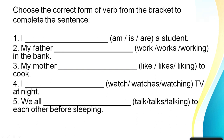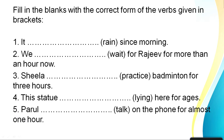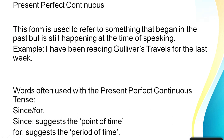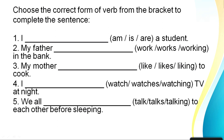Continuing the mixed practice: 'My mother dash to cook' — 'likes to cook.' 'I dash TV at night' — 'I watch TV at night' because it's a routine. 'We all dash to each other before speaking' — 'We all talk to each other before speaking.' Finally, a quick review of present perfect continuous: it refers to something that began in the past but is still continuing at the time of speaking — for example, 'I have been reading Gulliver's Travels for the last week,' meaning the reading has been ongoing.